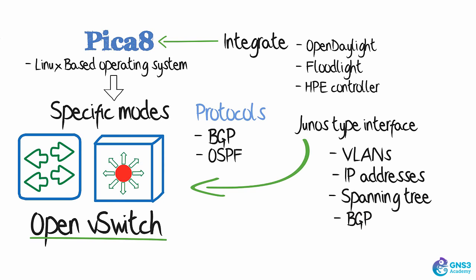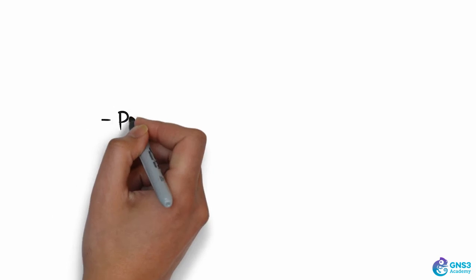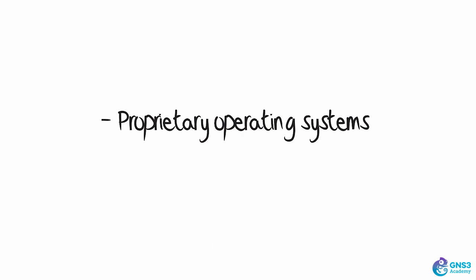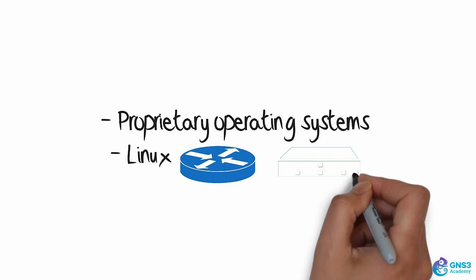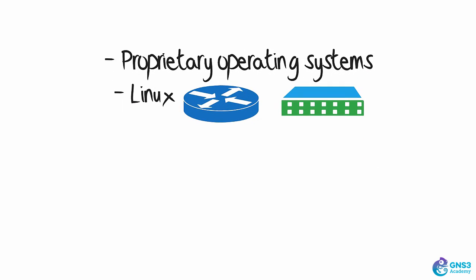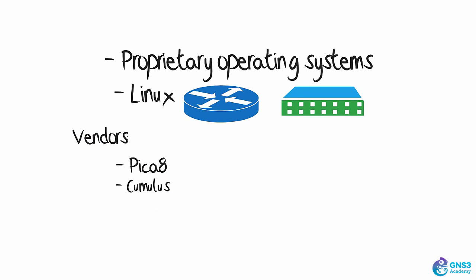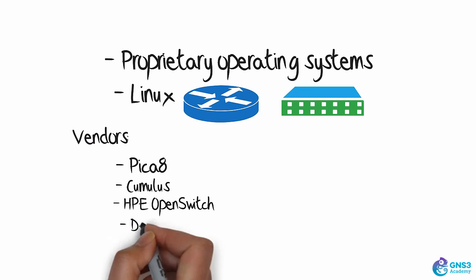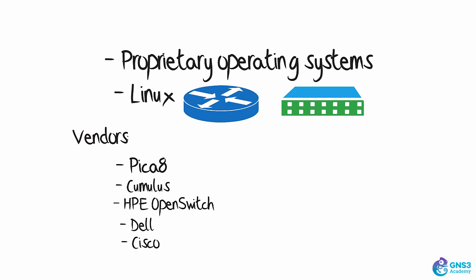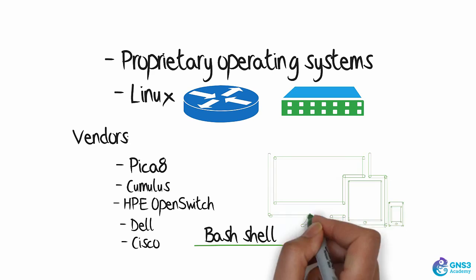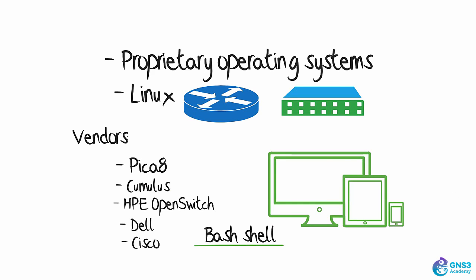Think about it — why are you using proprietary operating systems today? Why aren't you running Linux on your routers and switches? Well, there's a trend today with vendors such as Pika 8, Cumulus Networks, HP OpenSwitch, Dell, and even Cisco to allow you to use a bash shell for configuring networking devices.